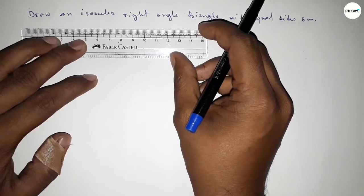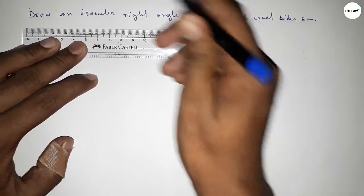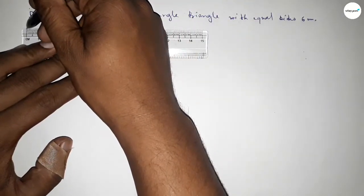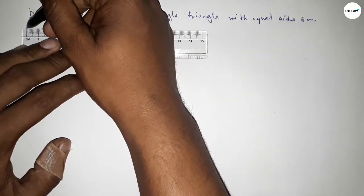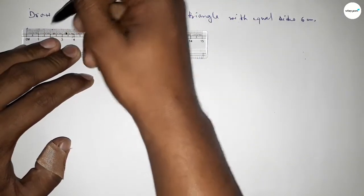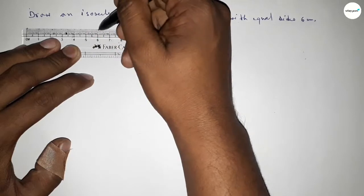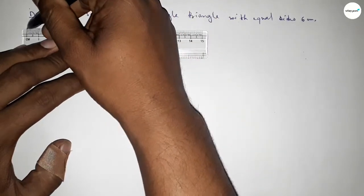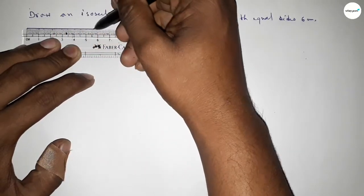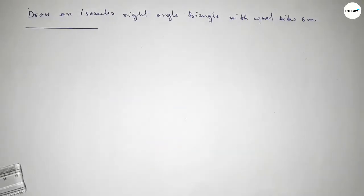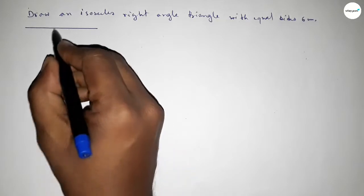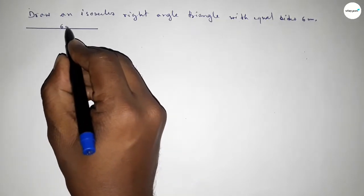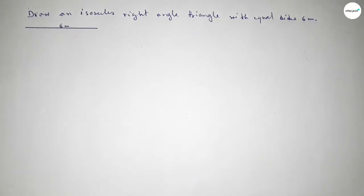First of all, we have to draw a line of length 6 centimeters. Starting from 0: 1, 2, 3, 4, 5, 6. So this is a line of length 6 centimeters.